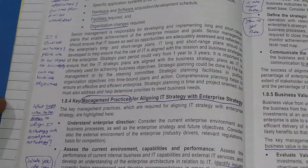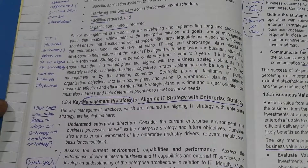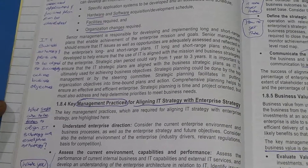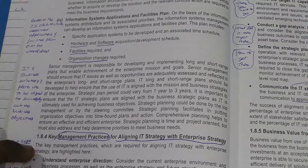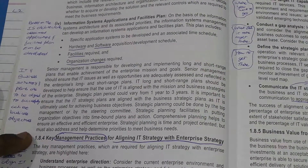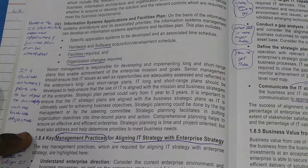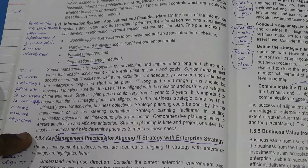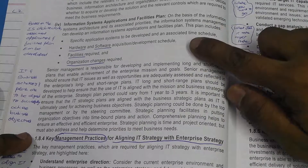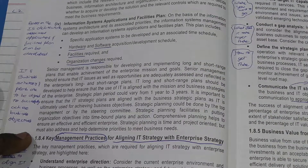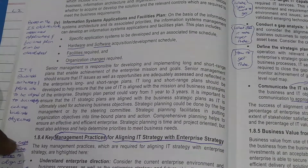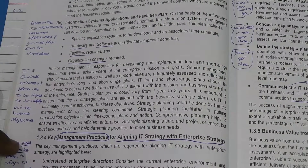Next we move on to the last point, which is the Information System Applications and Facilities Plan. This plan has four points which are very simple to understand and you can read them once and get it.